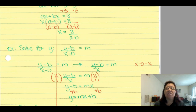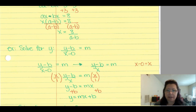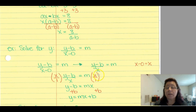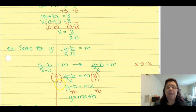Solve for y in (y - b) / (x - 0) = m. Simplifying, x - 0 = x, so (y - b) / x = m. The entire left side is being divided by x, so multiply both sides by x: y - b = mx. Then add b to both sides: y = mx + b.